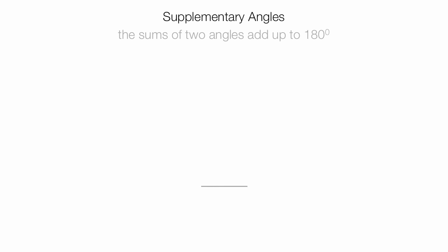Supplementary angles, the sum of two angles add up to 180 degrees. A straight line turns out to be 180 degrees.